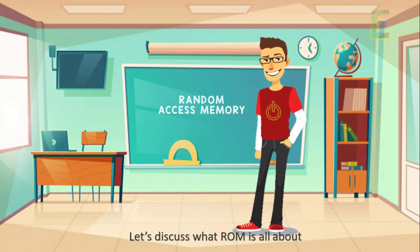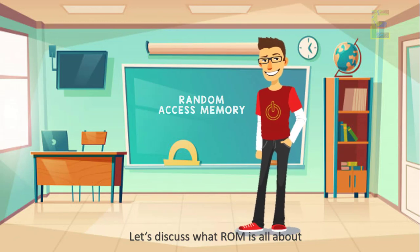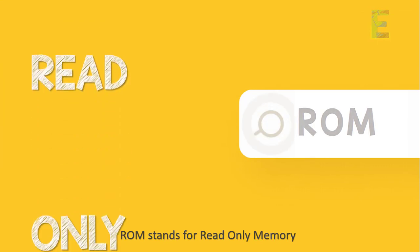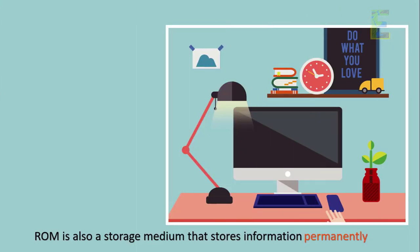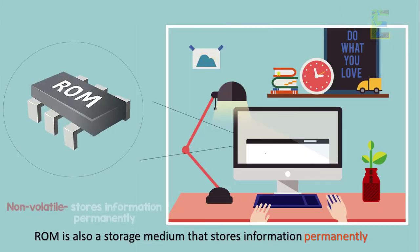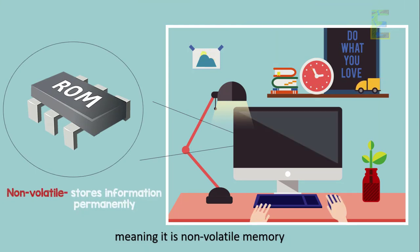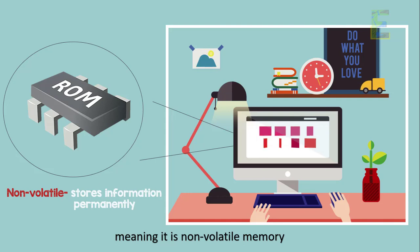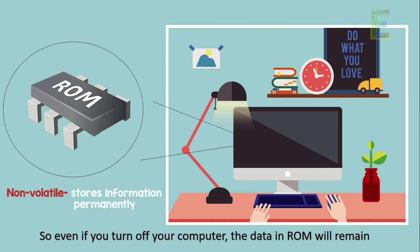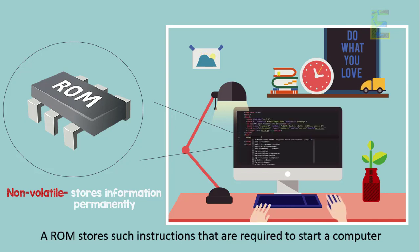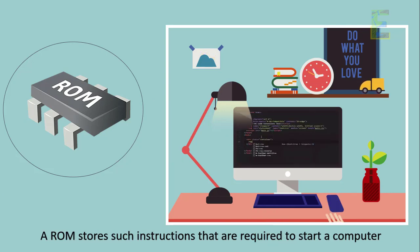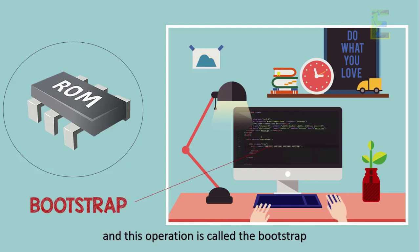Now let's discuss what ROM is all about. ROM stands for Read Only Memory. As the name indicates, it can only read data. ROM is also a storage medium that stores information permanently, meaning it is non-volatile memory. So even if you turn off your computer, the data in ROM will remain. A ROM stores such instructions that are required to start a computer, and this operation is called the bootstrap.